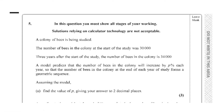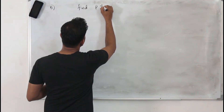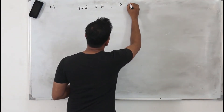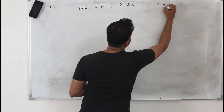Question number five. A colony of bees is being studied. The number of bees in the colony at the start of the study was 30,000. Three years after the study, the number of bees in the colony is 34,000. A model predicts that the number of bees in the colony will increase by p percentage each year and they form a geometric sequence. Find the value of p — that means find the percentage increase — giving your answer to two decimal places. This question has three marks.